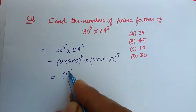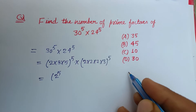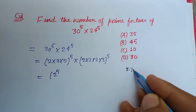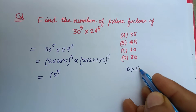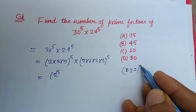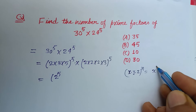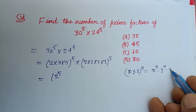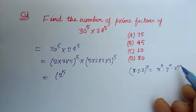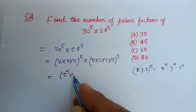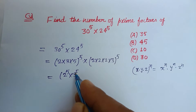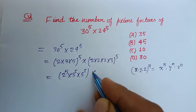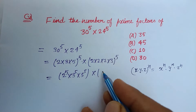We use the rule that (x · y · z)ⁿ = xⁿ · yⁿ · zⁿ. Applying this, 30⁵ = 2⁵ · 3⁵ · 5⁵, and 24⁵ = (2³)⁵ · 3⁵.